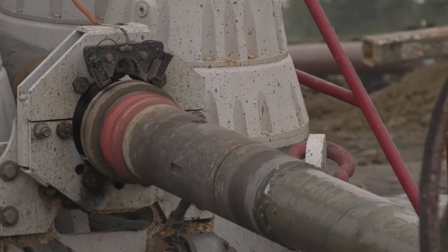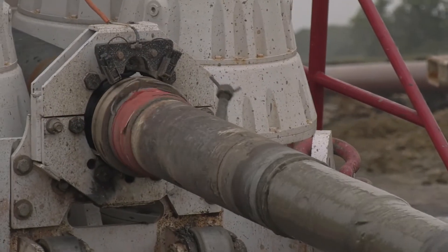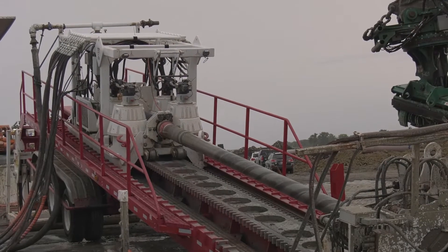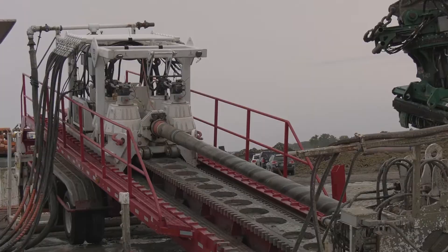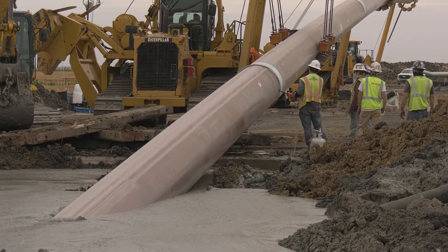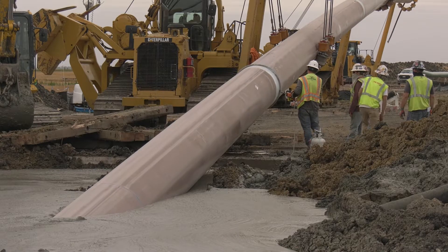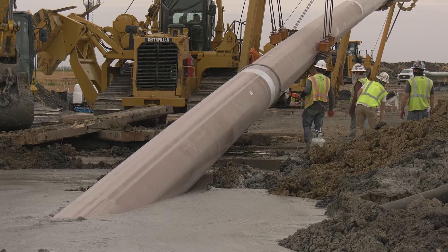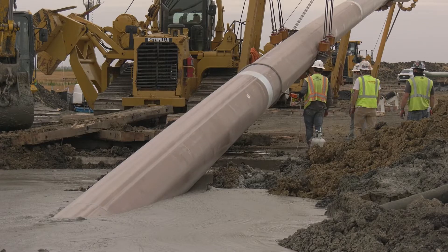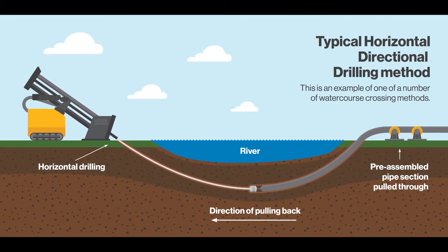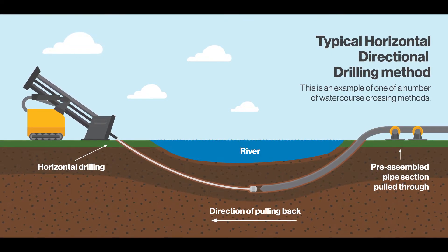What you'll do is drill a pilot hole first, then run the drill rod back through, hook onto the pipe, and pull that back underneath the river. It's a minimum of 40 feet below the bottom of the river, so you're actually creating a kind of a mini tunnel.